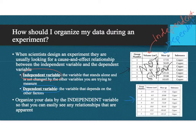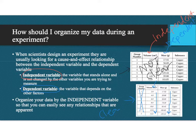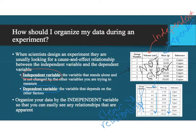But in the second data table, if we organize the same data instead of by group number and we actually organize it by our independent variable — which is volume — we can see that as volume increases, so does mass. So there is a clear relationship in this second data table between volume and mass. When you are creating data tables, be sure that you are always organizing it by your independent variable so that you can easily see any relationships that are apparent during the experiment.